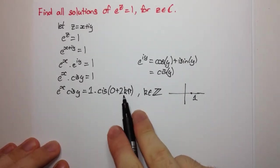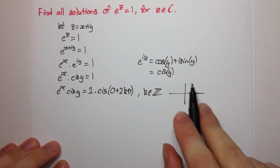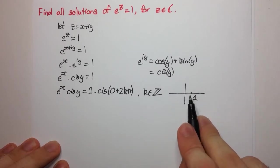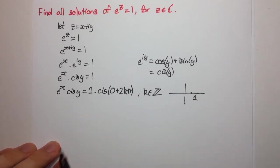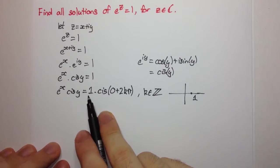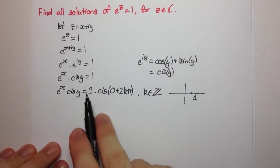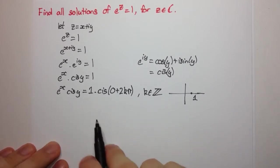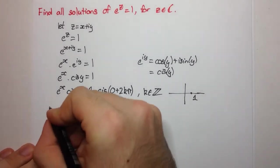This just says we can go around as many times as we like, but as long as we get back here, we still have the same number. So what does that mean? We can now equate the moduli and the arguments of these two complex numbers.